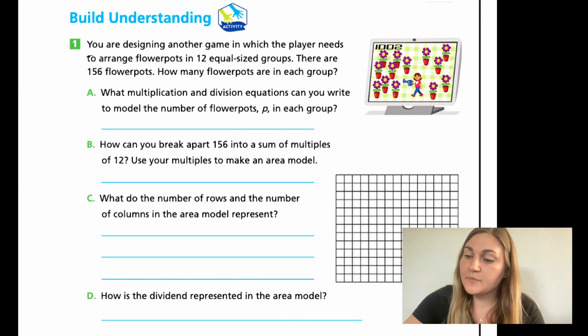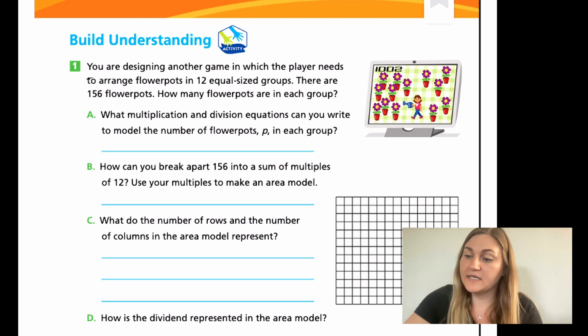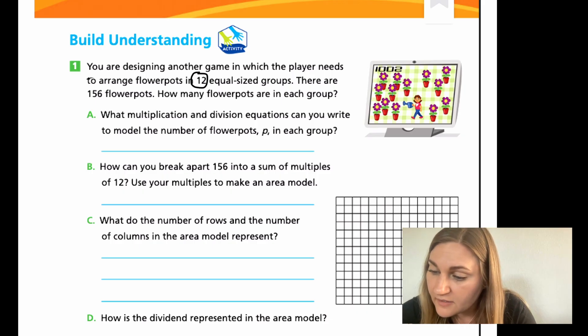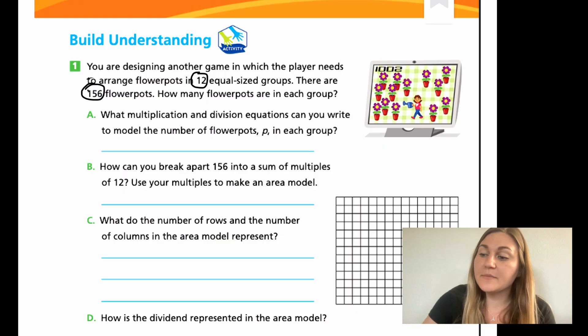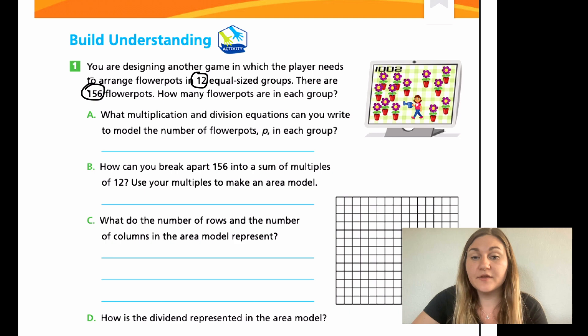All right. So, now into the Build Your Learning question number one. It says, you are designing another game in which the player needs to arrange flower pots in 12 equal sized groups. There are 156 flower pots. How many flower pots are in each group? All right. So, I'm going to go back through, circle my numbers. So, I have 12 and 156. And the question says, how many flower pots are in each group? So, I have 156 flower pots total and they're being split into 12 equal sized groups.